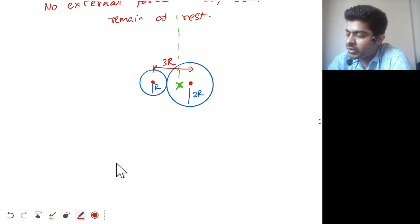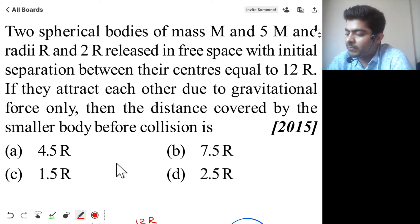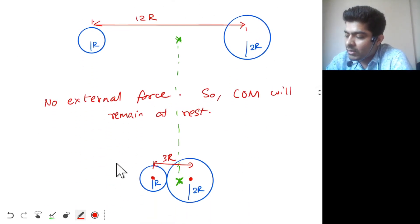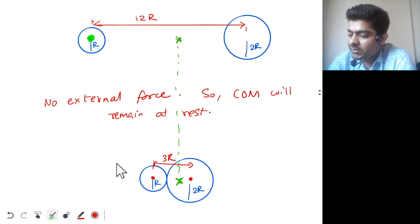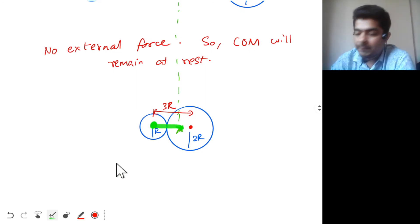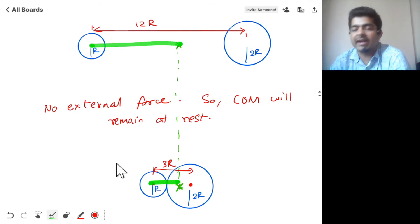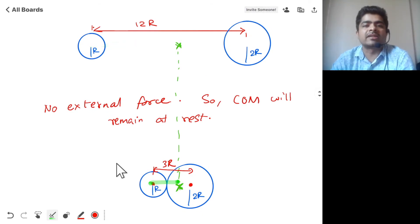The question asks for the distance covered by the smaller body before collision. We need to find the initial distance of the smaller body from the center of mass, then find the final distance, and subtract them to get the displacement of the smaller sphere.